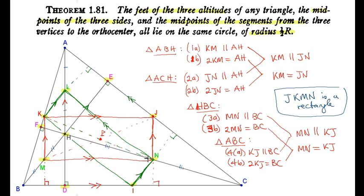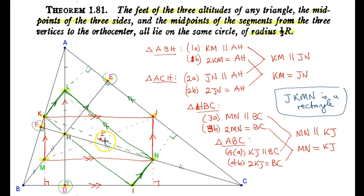We have established that L, K, I, J, M, N — these six points — are concyclic. All that remains is to show that the feet of the altitudes lie on this circle. We notice there are 90-degree angles involved. Focus on angle LDI — that angle subtends the diagonal of the green rectangle, which is the diameter of our circle. Since it is 90 degrees, point D must lie on the circle.